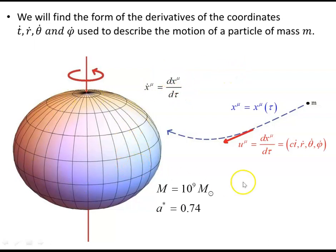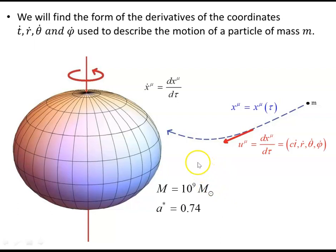For the calculations used in this video, the source mass will be a billion solar masses. That's using a known black hole from a certain quasar, which has been used previously in this series — the black hole at the heart of that quasar — with a spin parameter of 0.74.